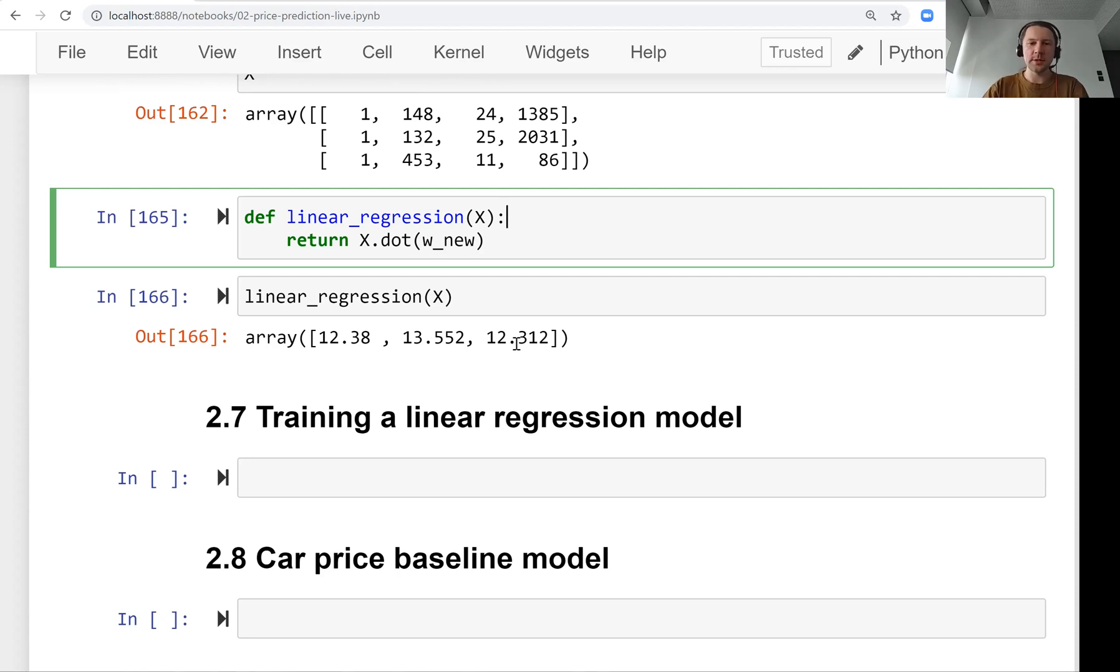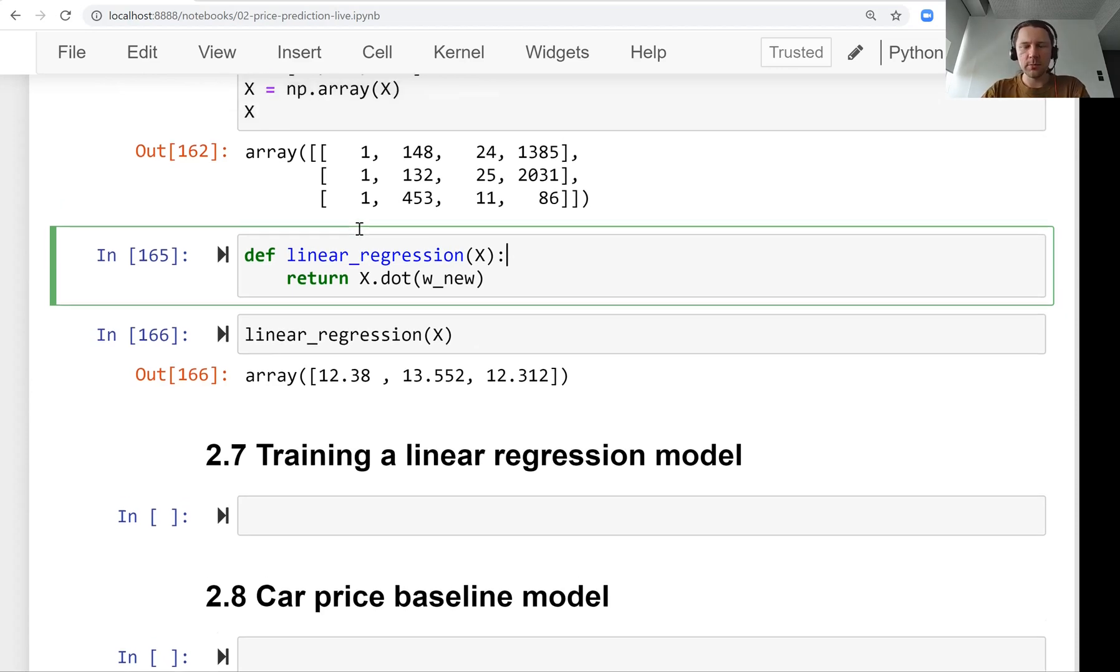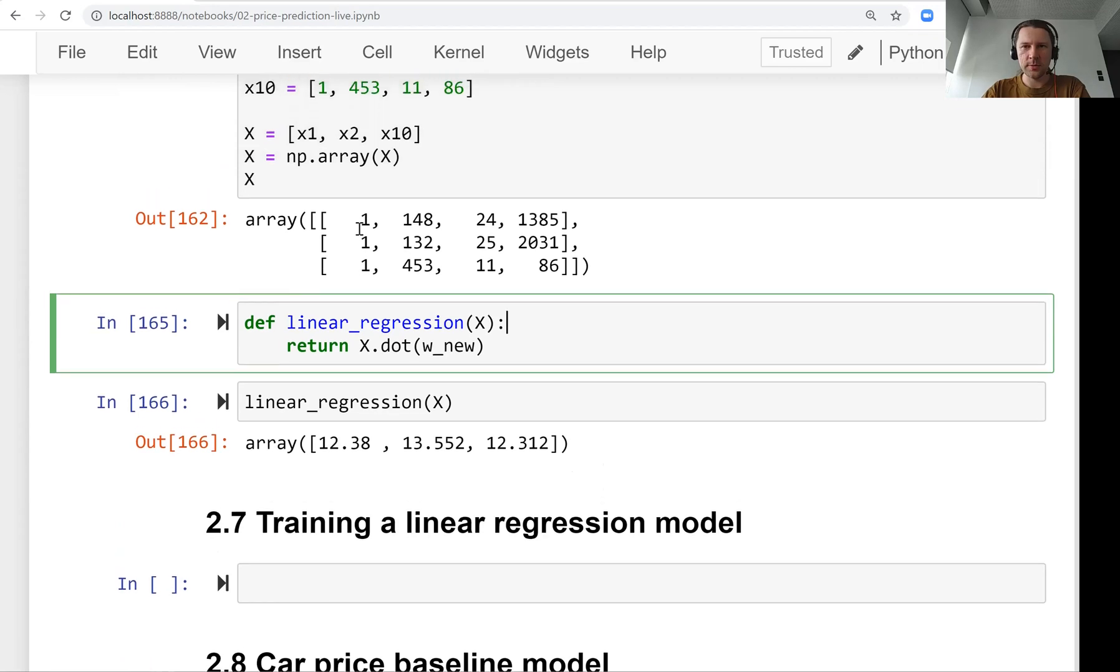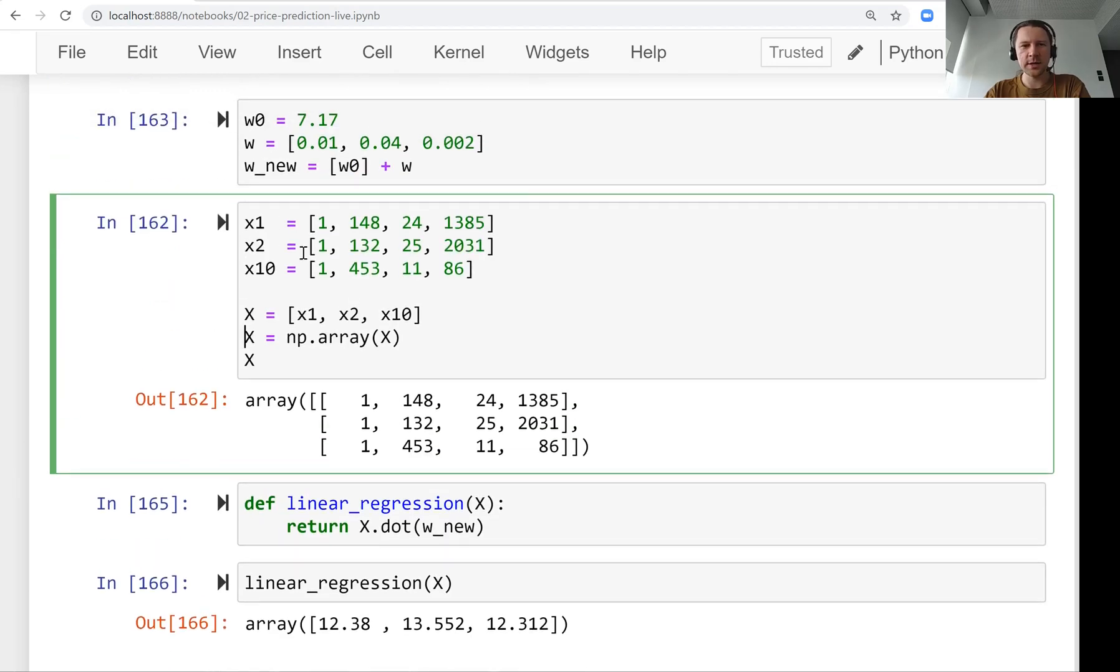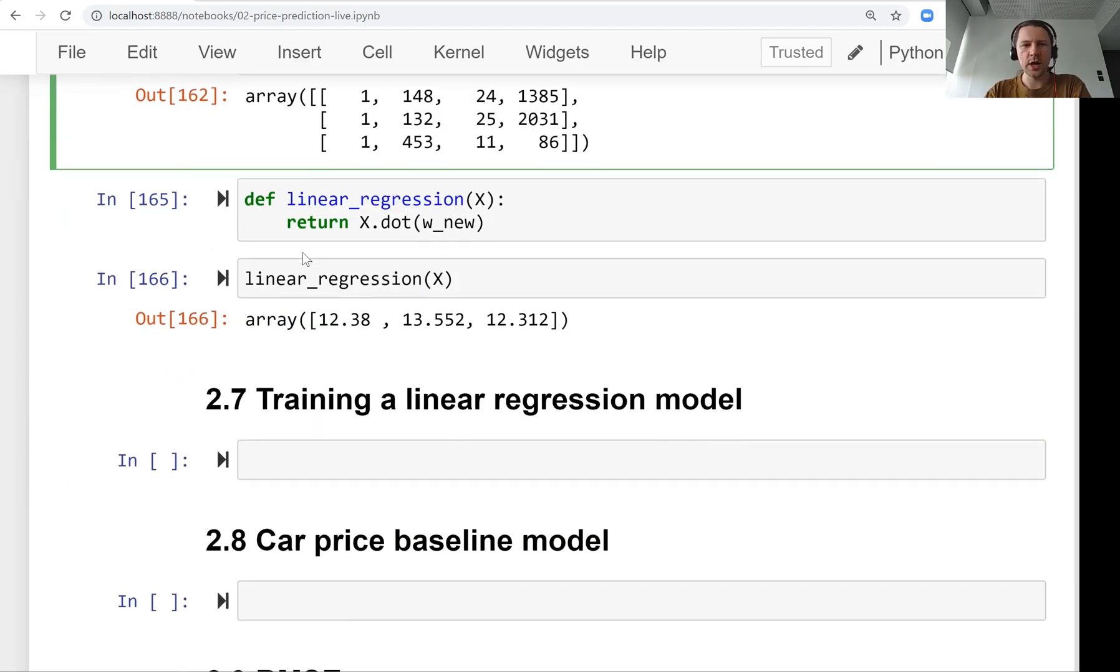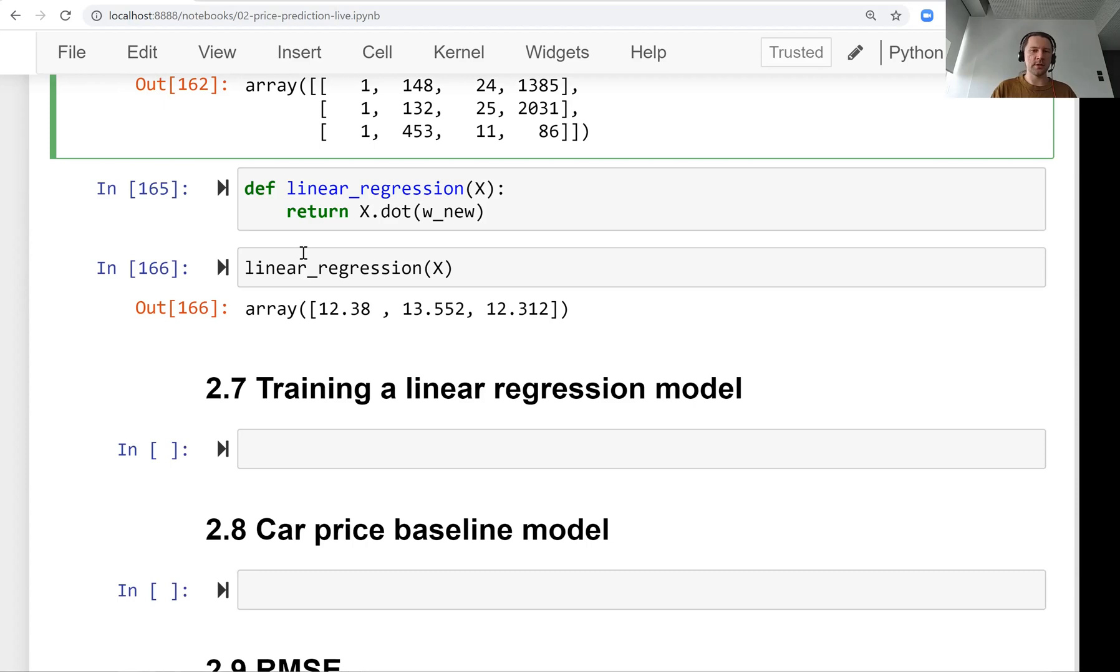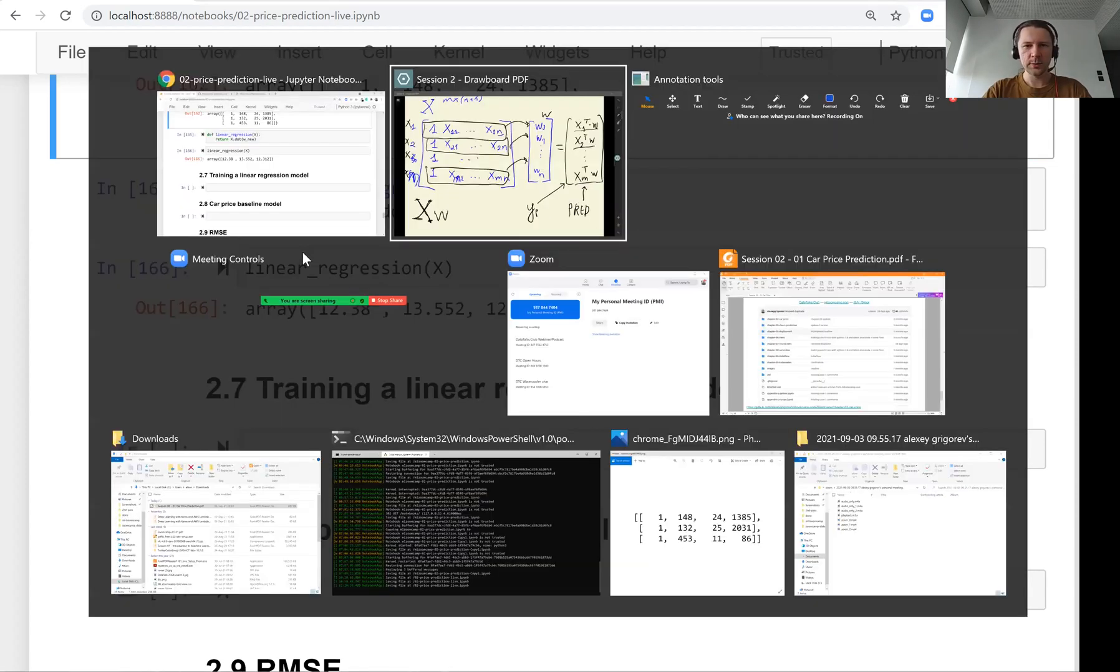In the previous lesson, we saw how to apply a model, and we know how to, when we have a feature matrix and the weights, how to make predictions. Now we need to answer the question, how do we actually come up with weights, and we will do this now.